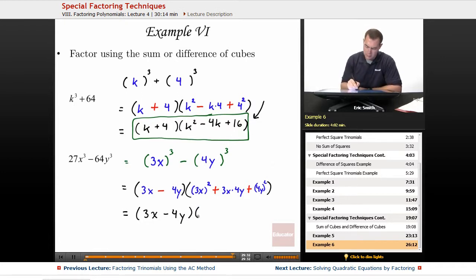3 times 4 would be a 12, so 12xy, and 4y squared, 16y squared.